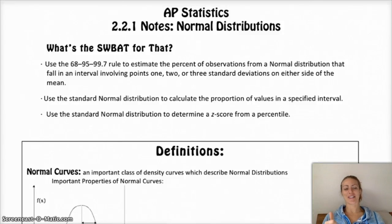Hi, AP Stats folks. Hope you're doing better than me. I'm sick today, so I apologize for the grogginess. We are moving on to section two of chapter two, which is we're going to start talking about normal distributions. The normal distribution is a special type of density curve, and it's very important because pretty much the rest of the year we're going to be using the standard normal curve.